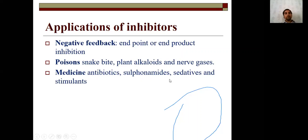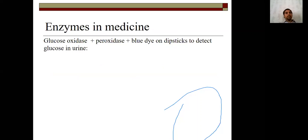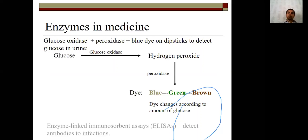Medicines, antibiotics, sulfonylamides, sedatives, and stimulants — all serve as medicinal inhibitors. So inhibitors are useful as poisons, as medicines, and for research. Enzymes are also useful in medicine. For example, enzyme glucose oxidase plus peroxidase plus a blue dye on a stick is used to detect glucose in urine. The glucose oxidase reacts with glucose and forms hydrogen peroxide; peroxidase then reacts, converting the blue color to green and brown. The color change corresponds to the amount of glucose — this is very useful for diabetic patients.